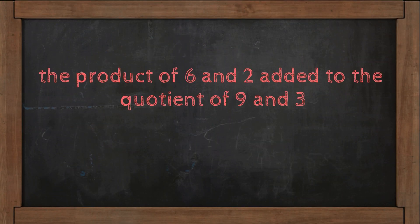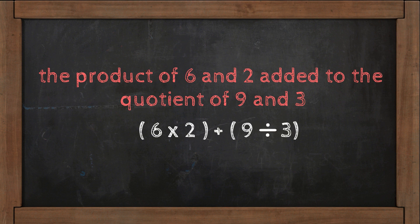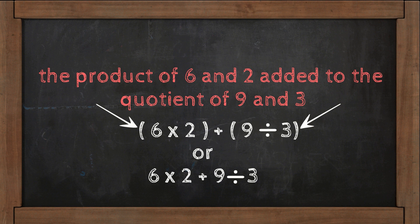The product of 6 and 2 added to the quotient of 9 and 3. So we use parentheses, but since it is multiply and divide, we can write it like this also.